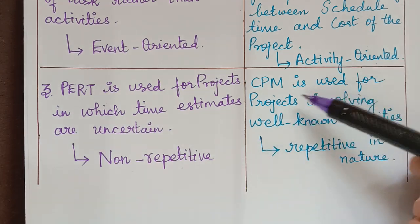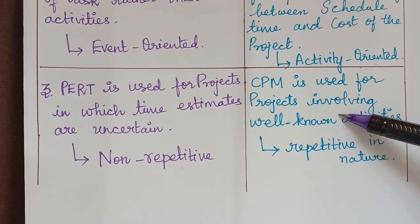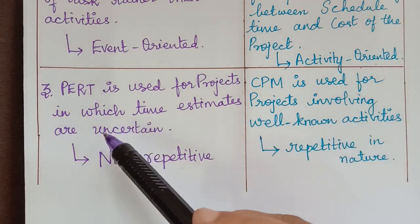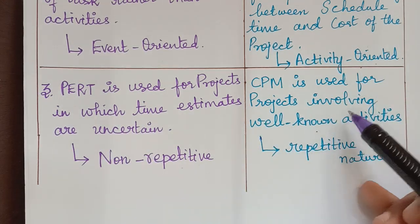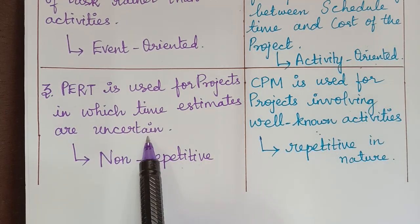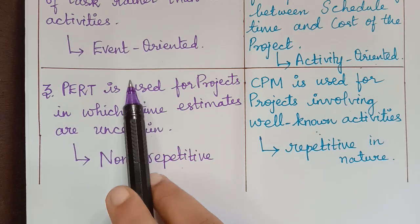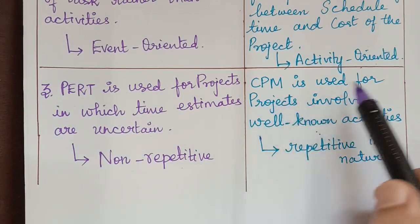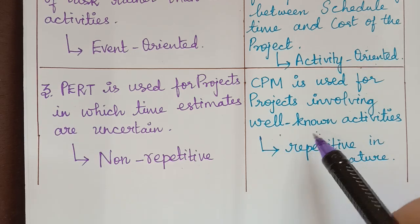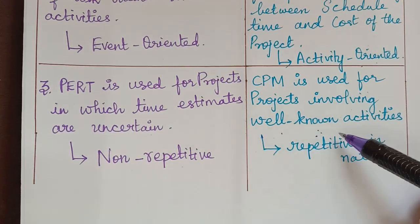Whereas CPM is used for projects involving well-known activities. In PERT the activities are not well known, they are uncertain, whereas in CPM the activities are well known. Therefore, CPM projects may be repetitive in nature.